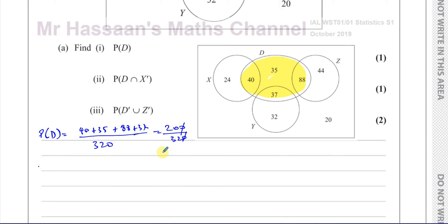They cancel out — 4 goes into both. 4 goes into 20, that's 5 over 8. So there's the answer for probability of D, that's part 1.